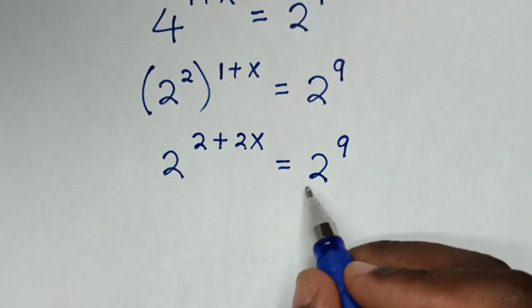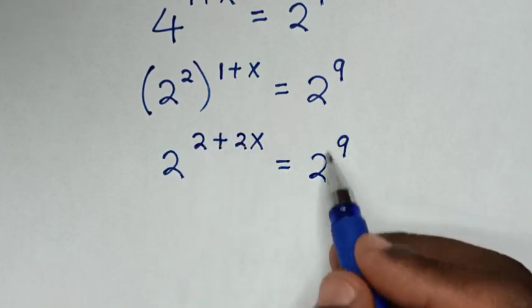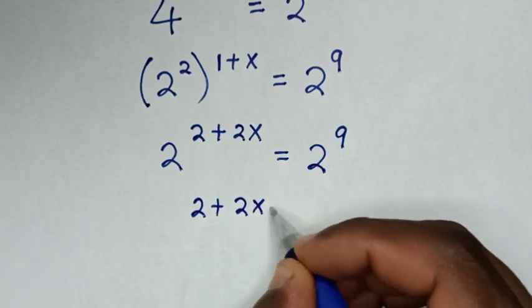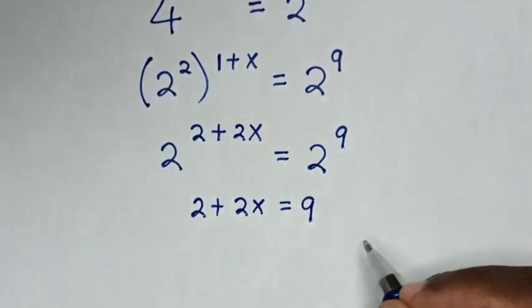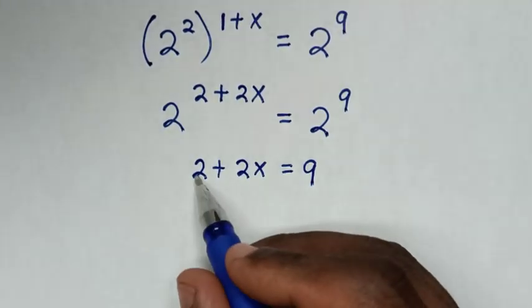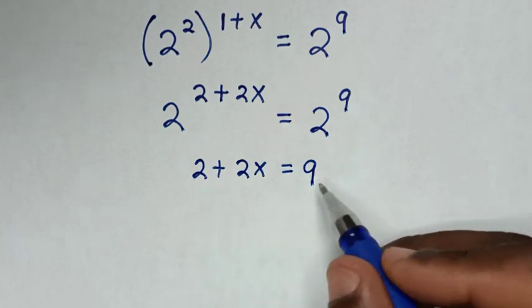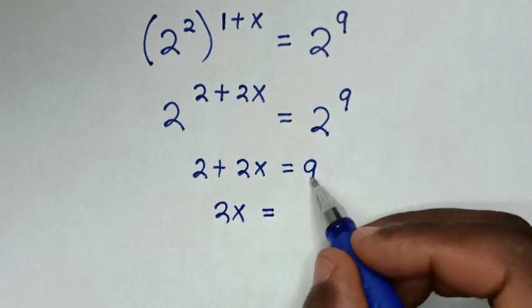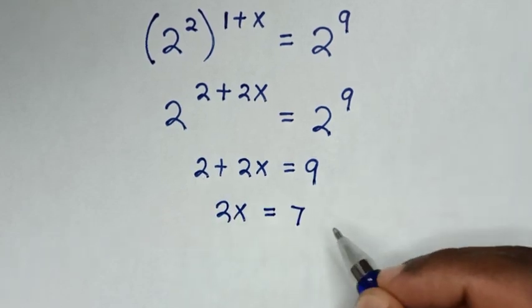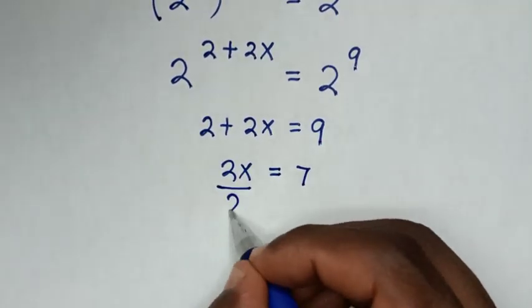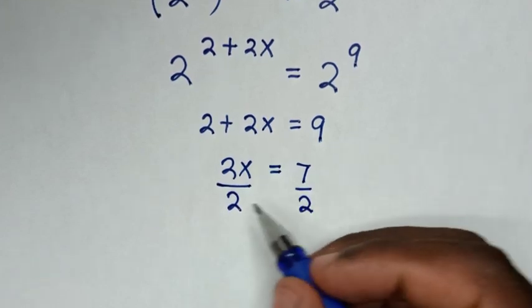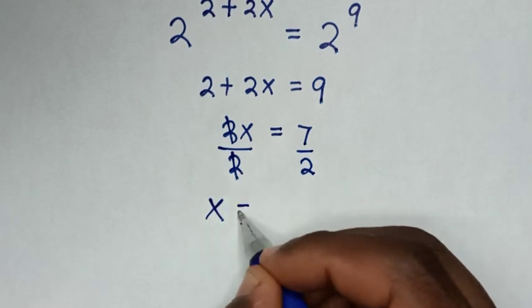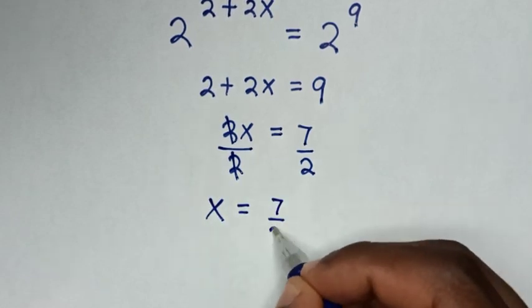Now we have the same base of 2 on both sides, so we compare the powers: 2 plus 2x is equal to 9. Taking 2 to the right side gives 2x equals 9 minus 2, which is 7. Dividing both sides by 2, x is equal to 7 over 2.